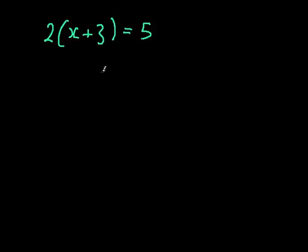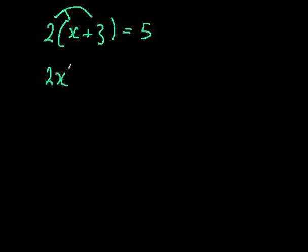If you get something like this and you have brackets, we need to multiply the brackets out. There is actually a video I'm going to make about how to expand brackets, so if you don't know how to do this, check that out as well. This 2 is going to multiply by the x and the 3, so we get 2x, and 2 times 3 equals 6, which equals 5.